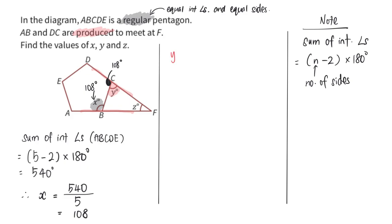So for y, it's also pretty straightforward. It's simply 180 minus 108 because it is adjacent angles on a straight line. This will give me 72.